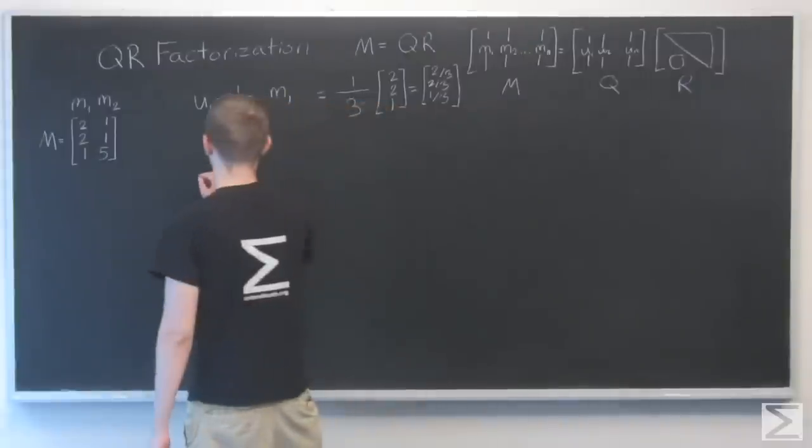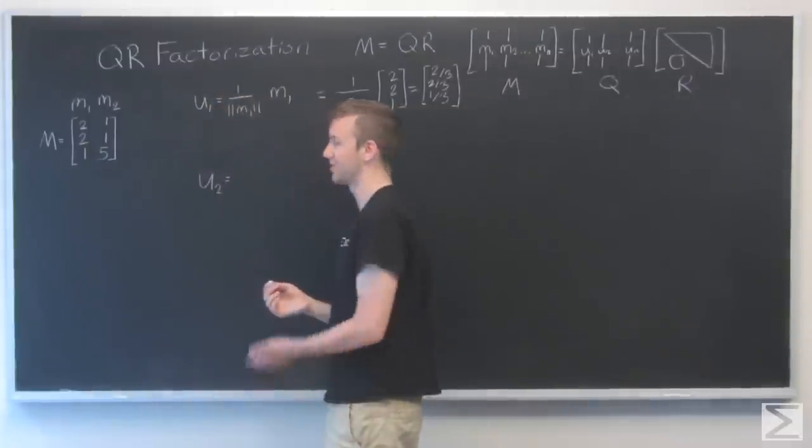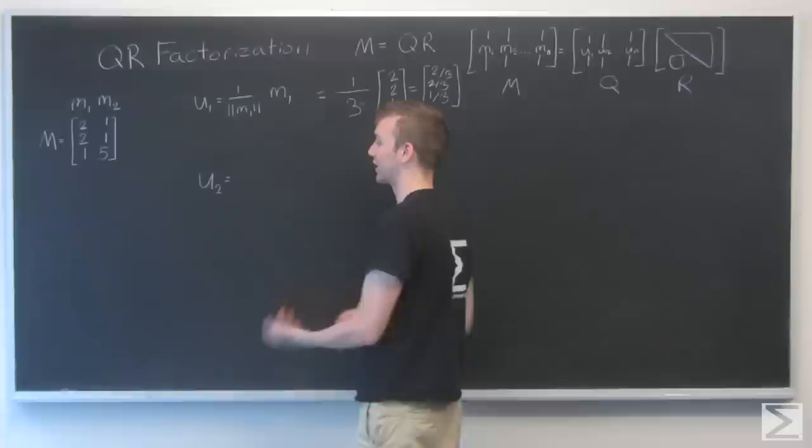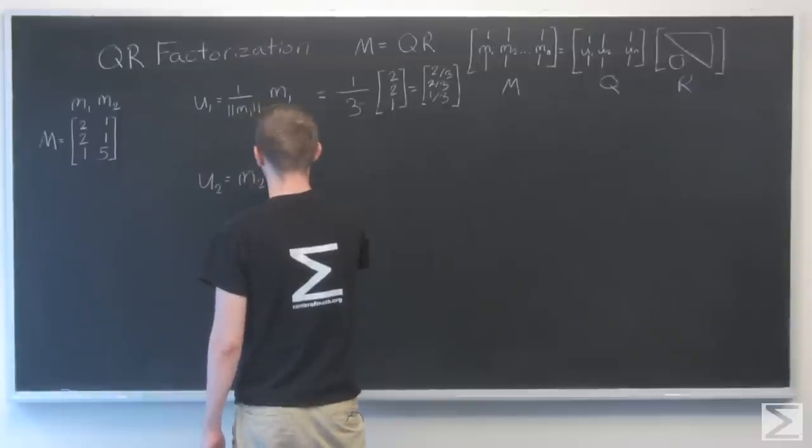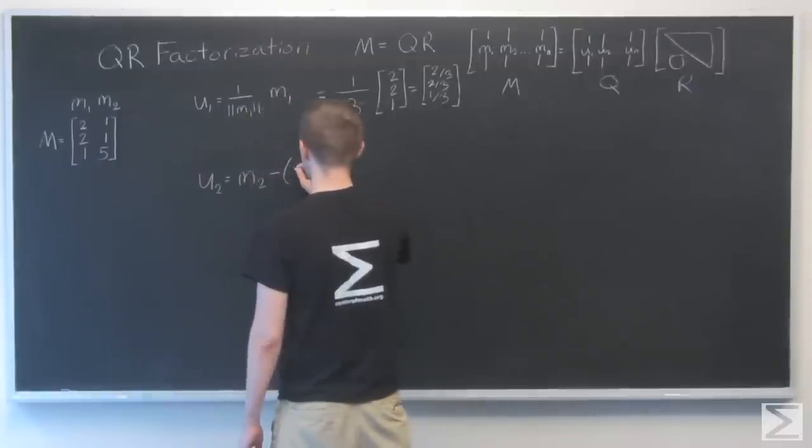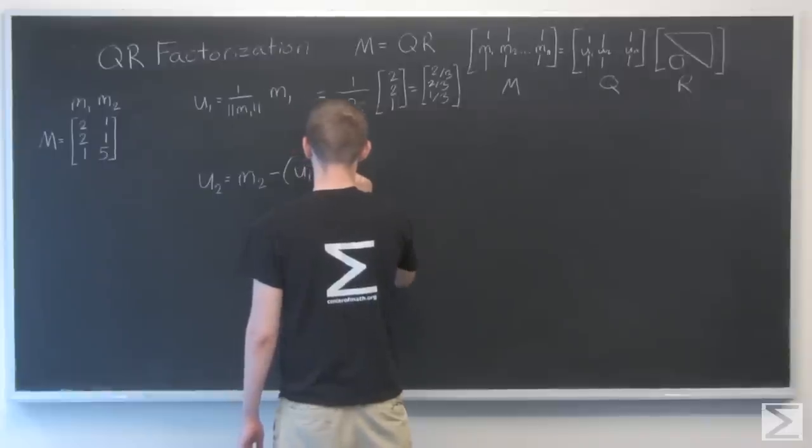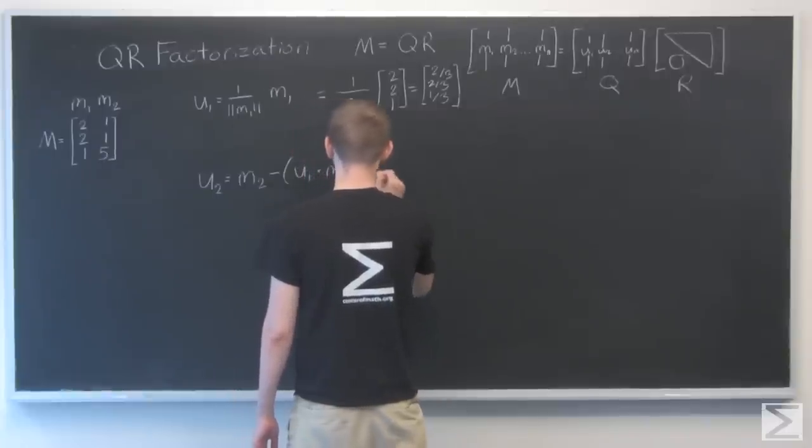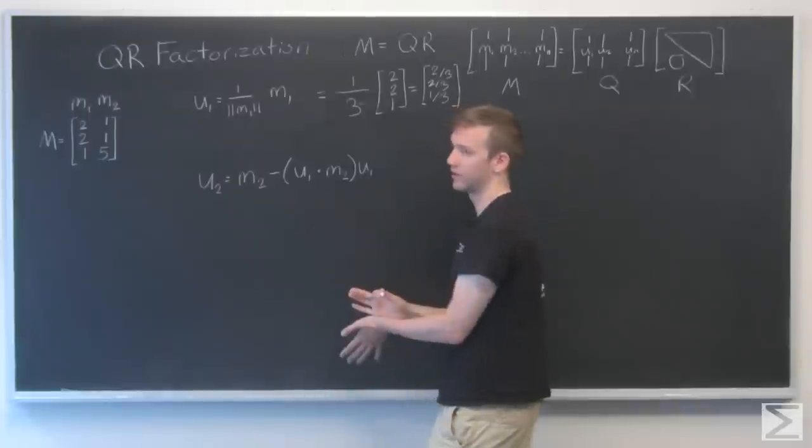Now, U2. Luckily there are only two column vectors in this particular matrix, so we don't get too complicated with U3 and U4. We just have U2, which is m2 minus (u1 dot m2) times u1, and then after that's done, we're going to have to divide by its length again.